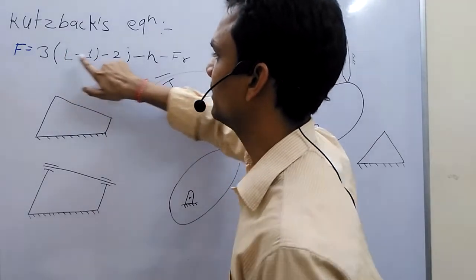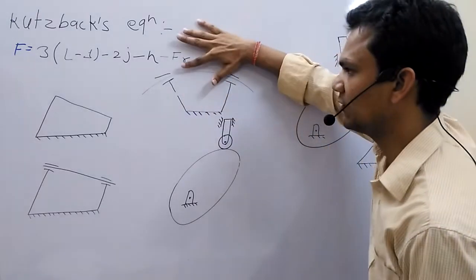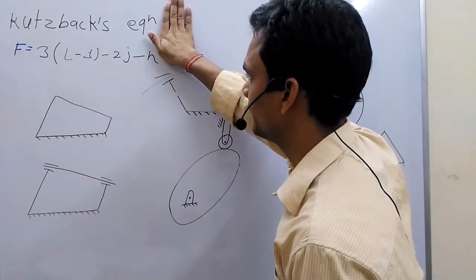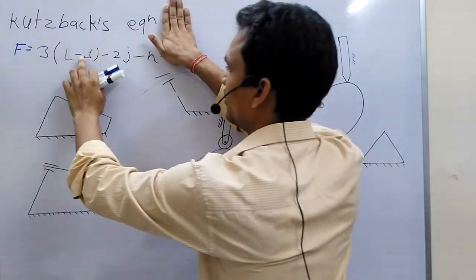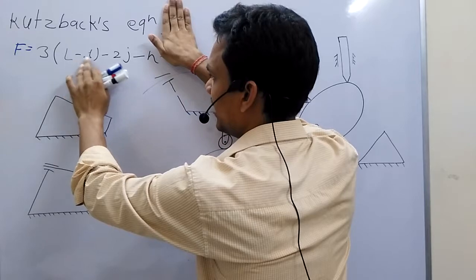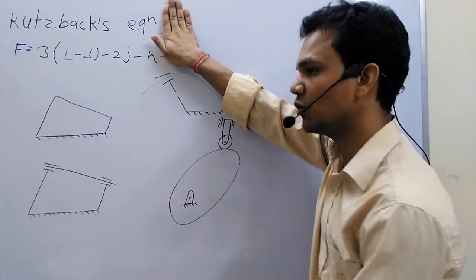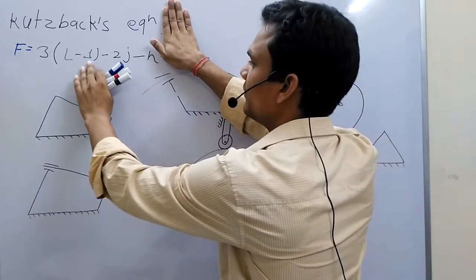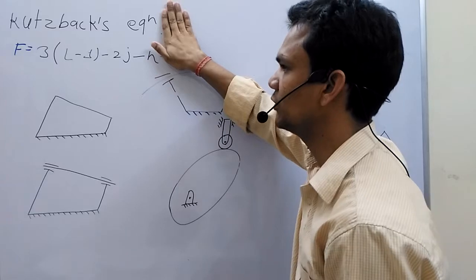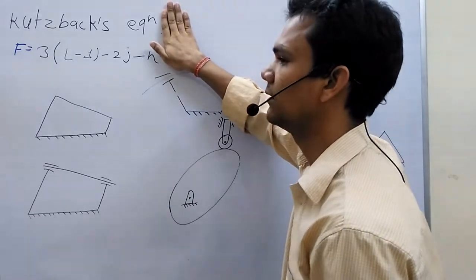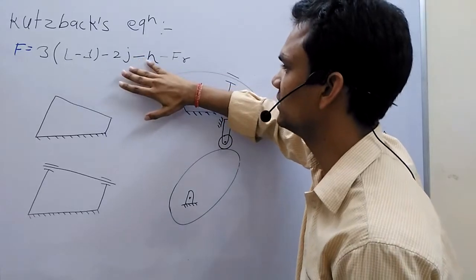These are the number of links, these are the number of binary joints, number of lower pairs, which is not quite the same as our binary numbers. But the general Grashof equation is this: I minus one. I take minus one because, out of our links, one link we fix. So this is the fixed link, and one binary joint has two links. One binary joint is made by two links. So this is the number of lower pairs.